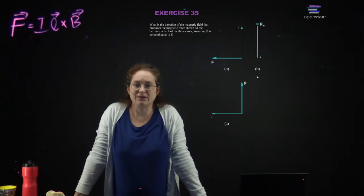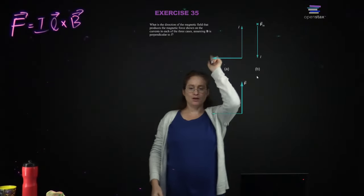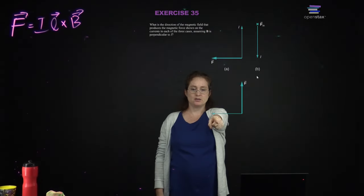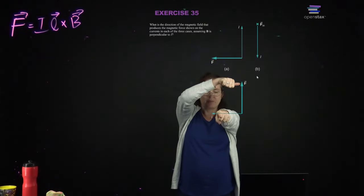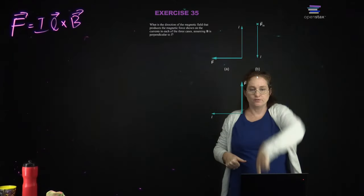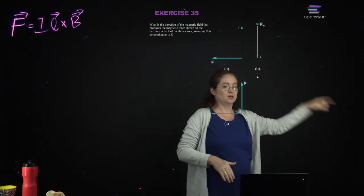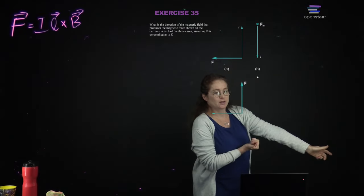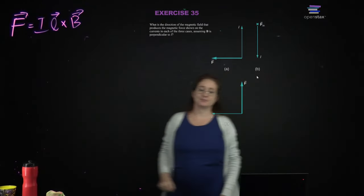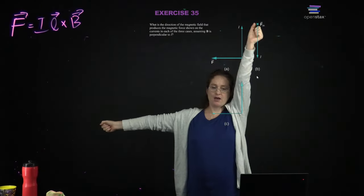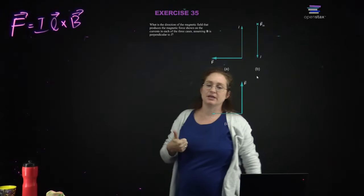What is the direction of the magnetic field that produces the magnetic force shown on the currents in each of the three cases? Current and force given — we test B towards you, V cross B is that way, so B can't be this way, B must be that way. V and F given — magnetic field has to be this way or that way; we test this way, V cross B is towards you, but the force is that way, so B can't be this way, it has to be that way. Current and force — we test the magnetic field towards you, V cross B is up, that's the correct one.